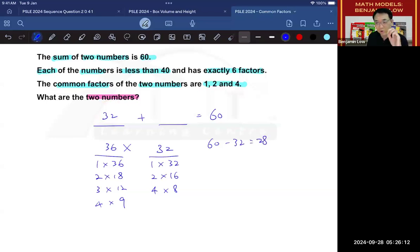And you now need to check if 28 fulfills all the same conditions. So let's try. 28 would be 1 times 28, 2 times 14, and 4 times 7.